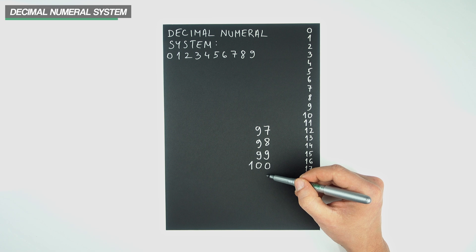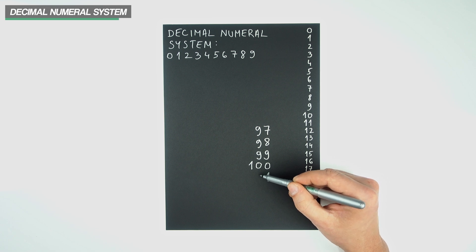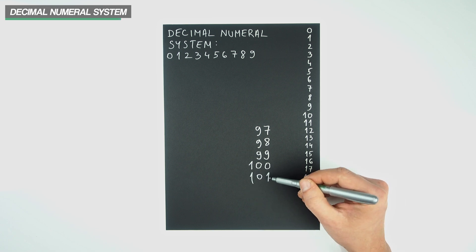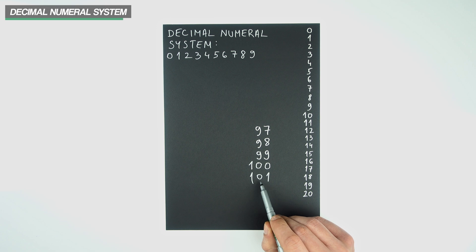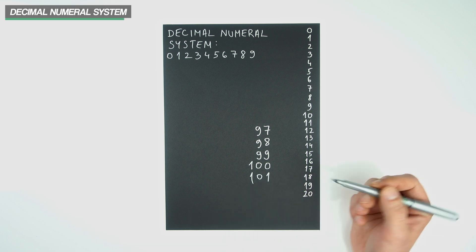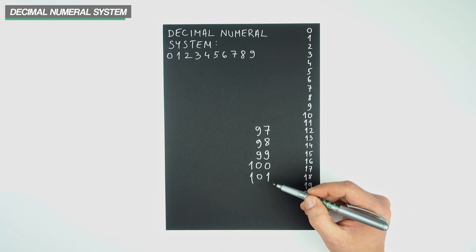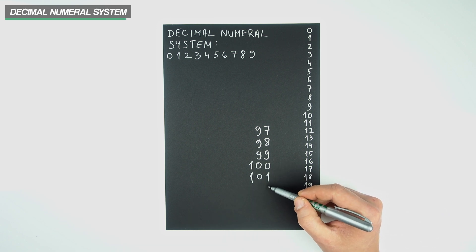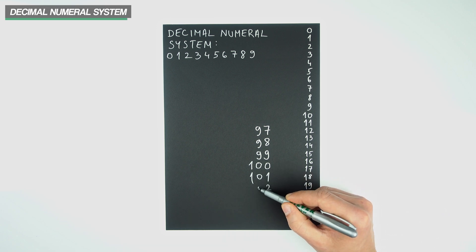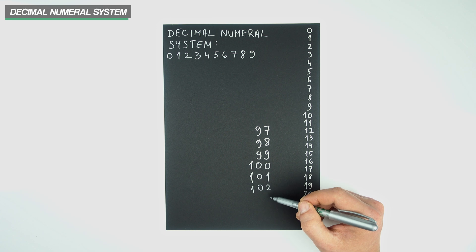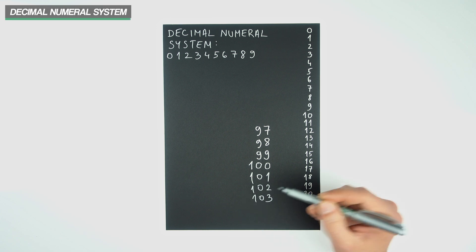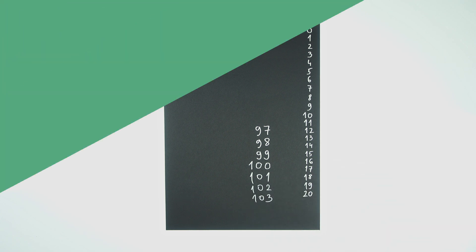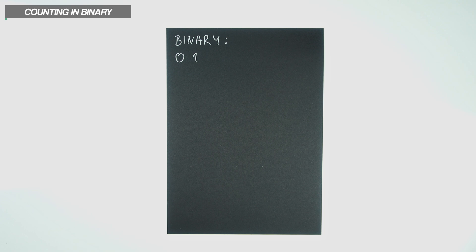Moving forward, we increase the rightmost column by 1, and since we're able to do that, everything to the left gets carried down, so we get to 101, 102, 103, and so on and so forth.